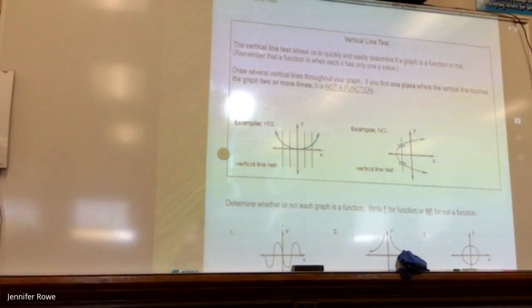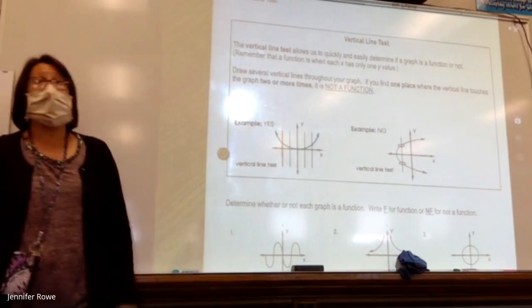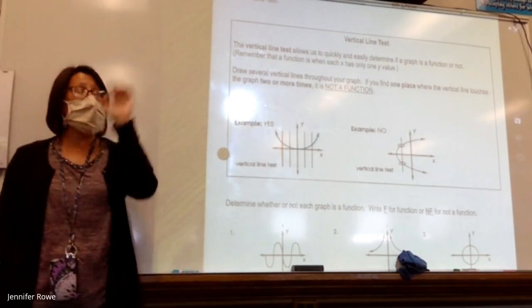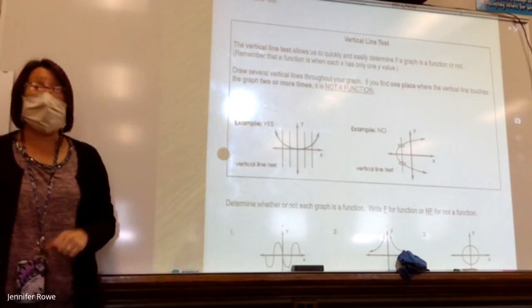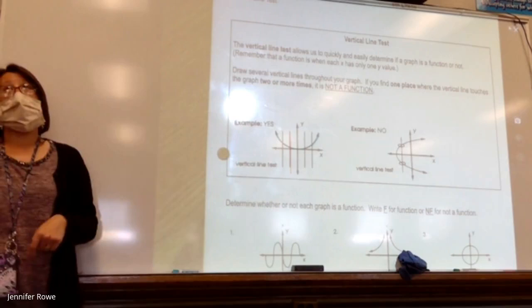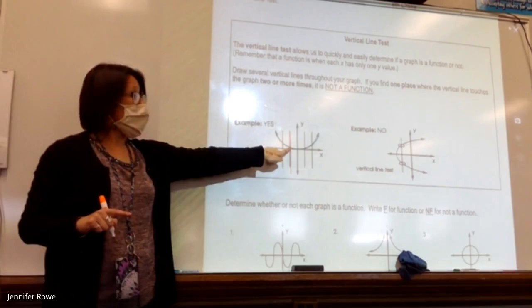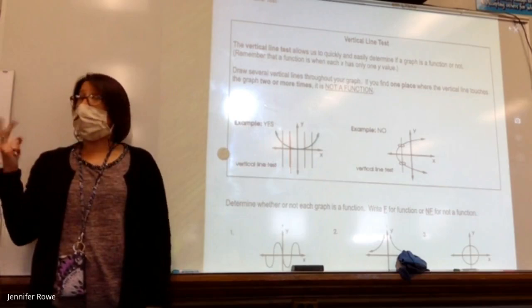I draw another vertical line — how many times do the orange and blue intersect? One time. I've now drawn two vertical lines and they've each touched that U one time. Let's use the y-axis because the y-axis is a vertical line. How many times does the y-axis touch that U? One time. And this one? One time. Every single time that vertical line only touches once — that means this graph is a function.